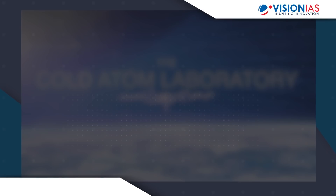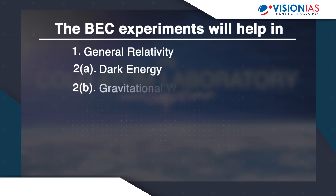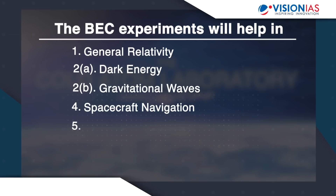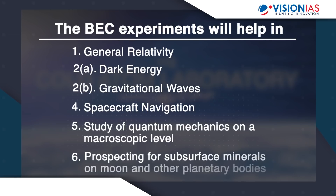This has been our discussion on the fifth state of matter, or the Bose-Einstein condensate. I hope you have now understood the concept in detail and also the implications of the experiments being done on the International Space Station. In the next episode of the Current Affairs Review Series, we'll take up yet another important current affairs topic. Till then, take care. Thank you.